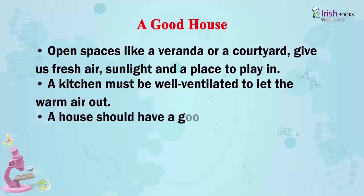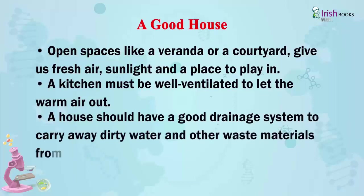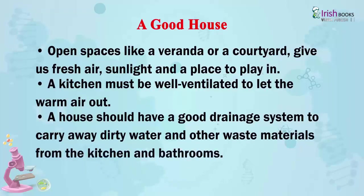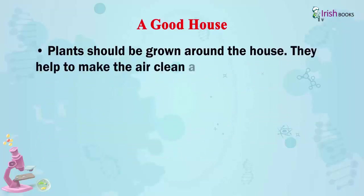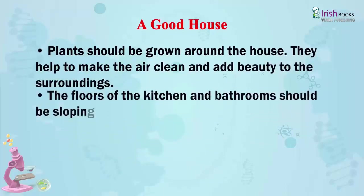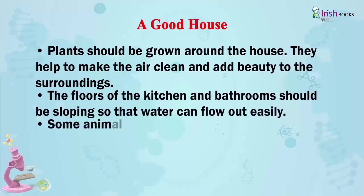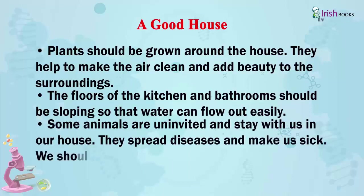A kitchen must be well ventilated to let the warm air out. A house should have a good drainage system to carry away dirt, water and other waste materials from the kitchen and bathroom. Plants should be grown around the house. They help to make the air clean and add beauty to the surroundings. The floors of the kitchen and bathrooms should be sloping so that water can flow out easily.